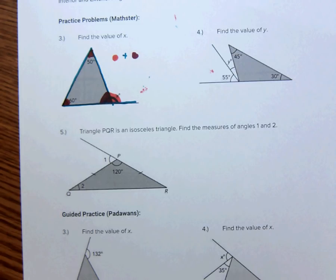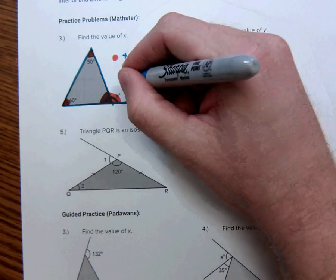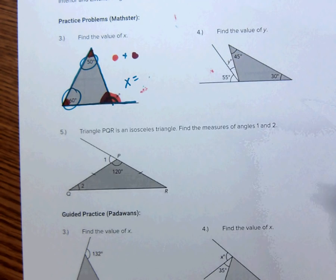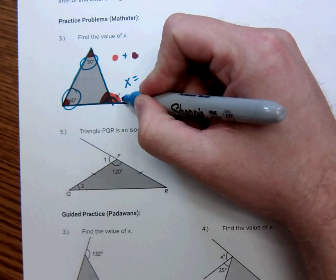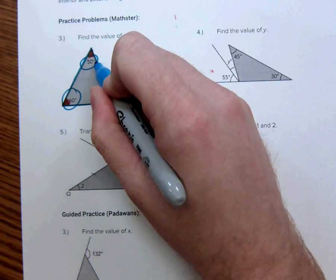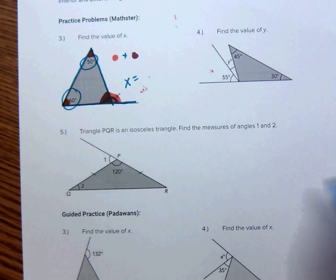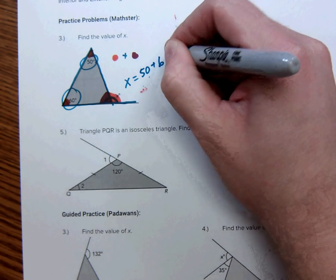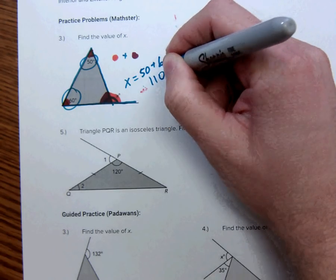Alright. And I don't even know what theorem it's called. But, basically, X here is equal to the other two angles. The exterior angle is always equal to the other two angles combined. So, X is equal to 50 plus 60, which is 110 degrees.